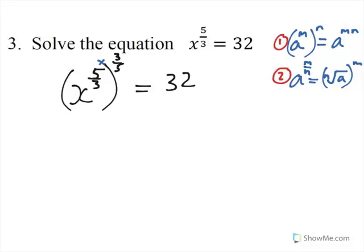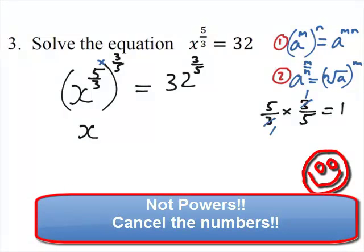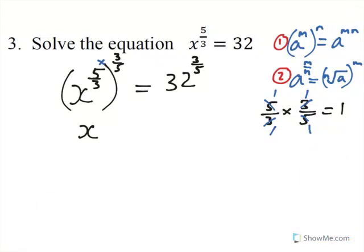The left hand side will give you x to the power of 1, because 5 thirds times 3 fifths is equal to 1. If you cancel these powers, you will get the numerator 1 times 1 is 1, the denominator 1 times 1 is 1, and 1 divided by 1 is 1.